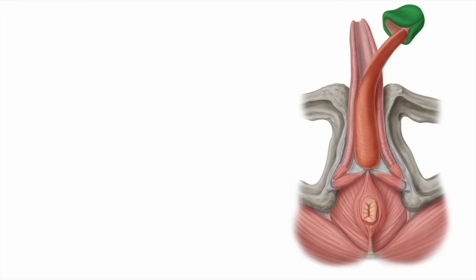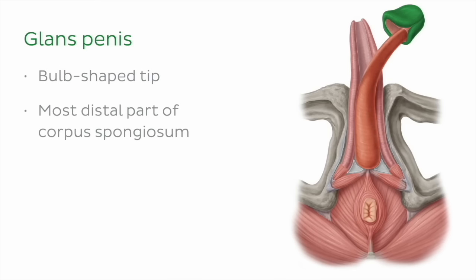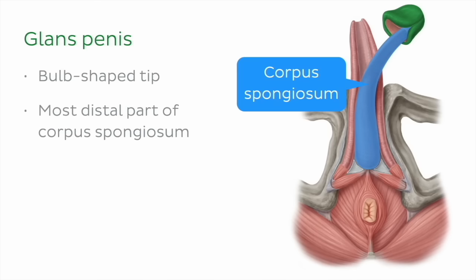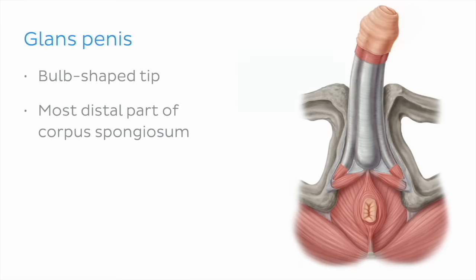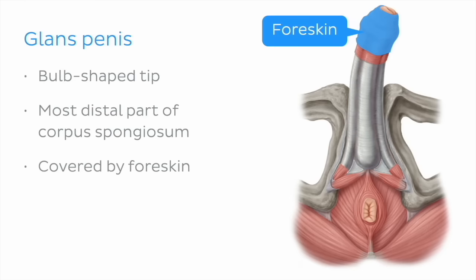Finally, the third part of the penis is known as the glans penis. This enlarged, bulb-shaped tip is the most distal part of the corpus spongiosum. The glans penis is also covered by the foreskin, also known as the prepuce. Circumcision is removal of the foreskin, so circumcised males have no covering over the glans.